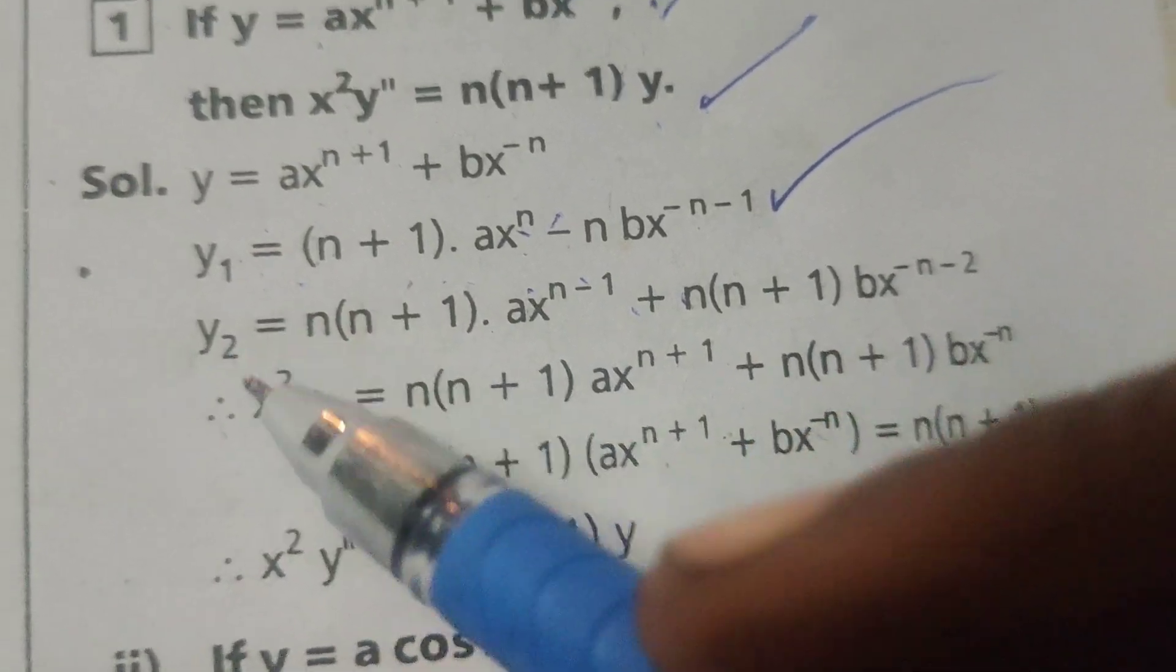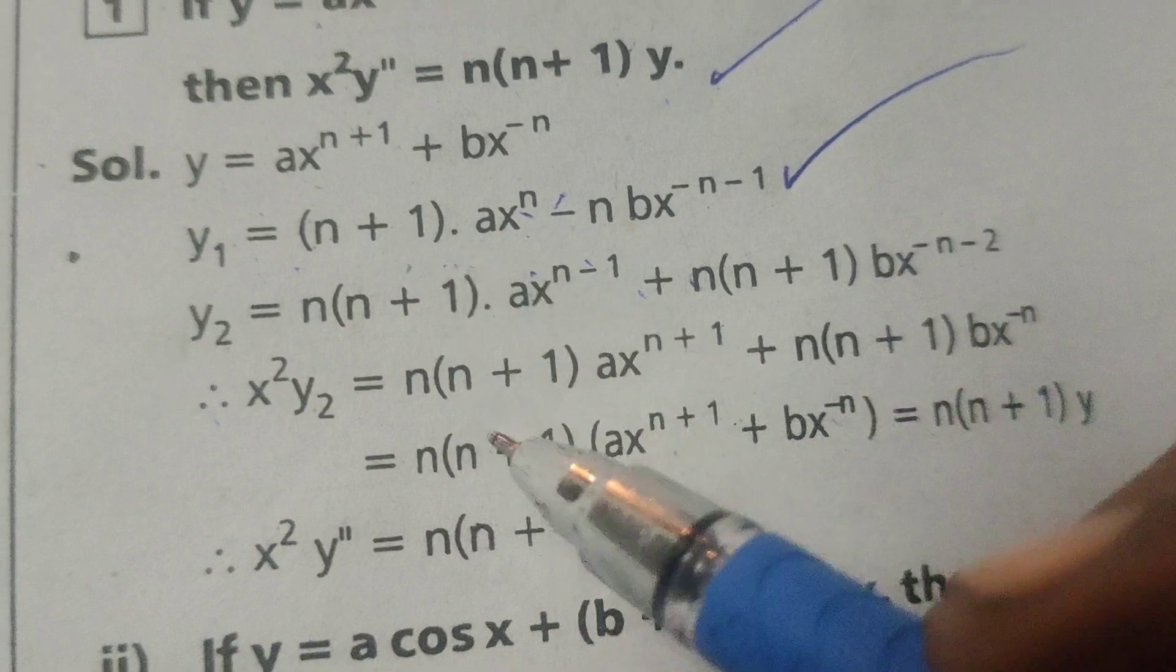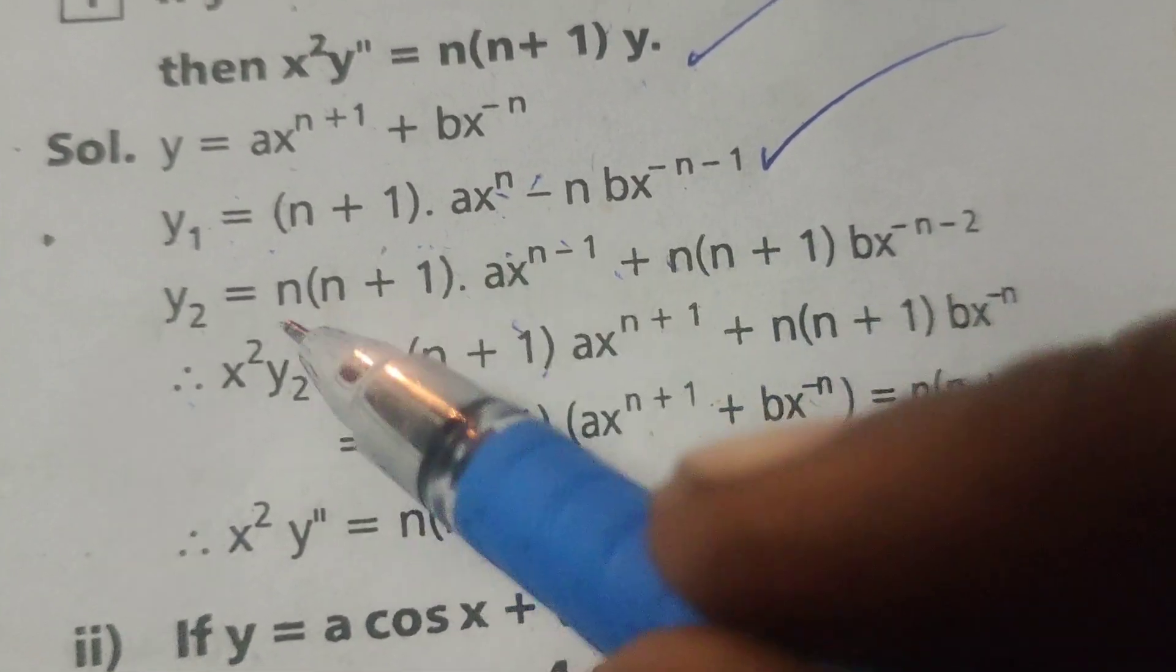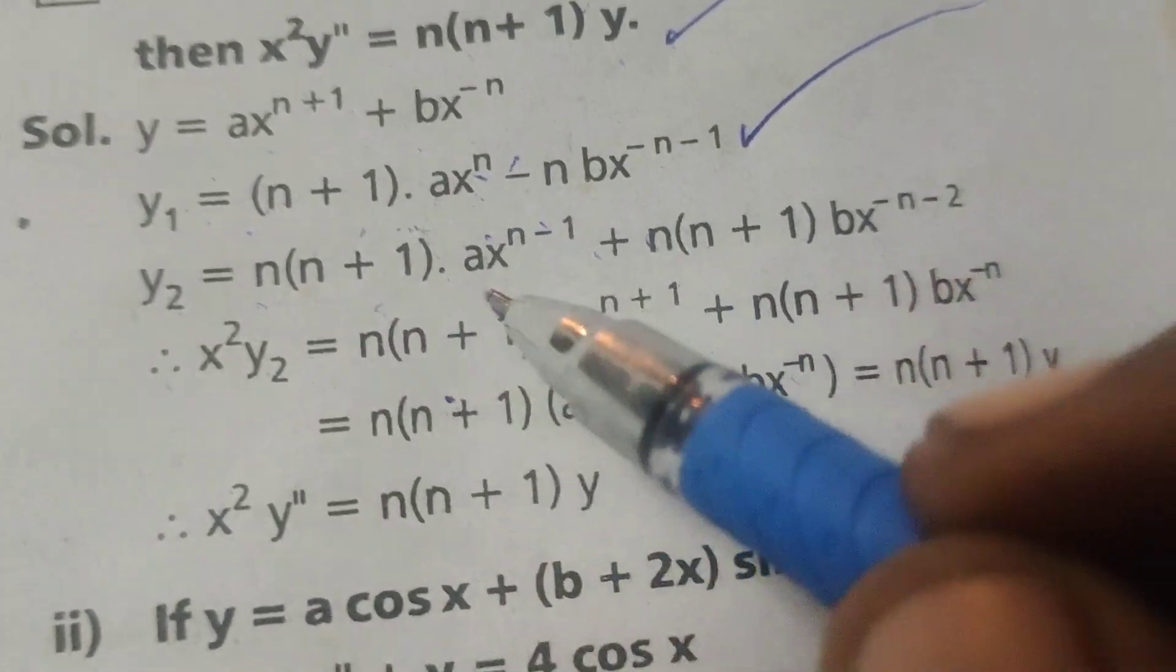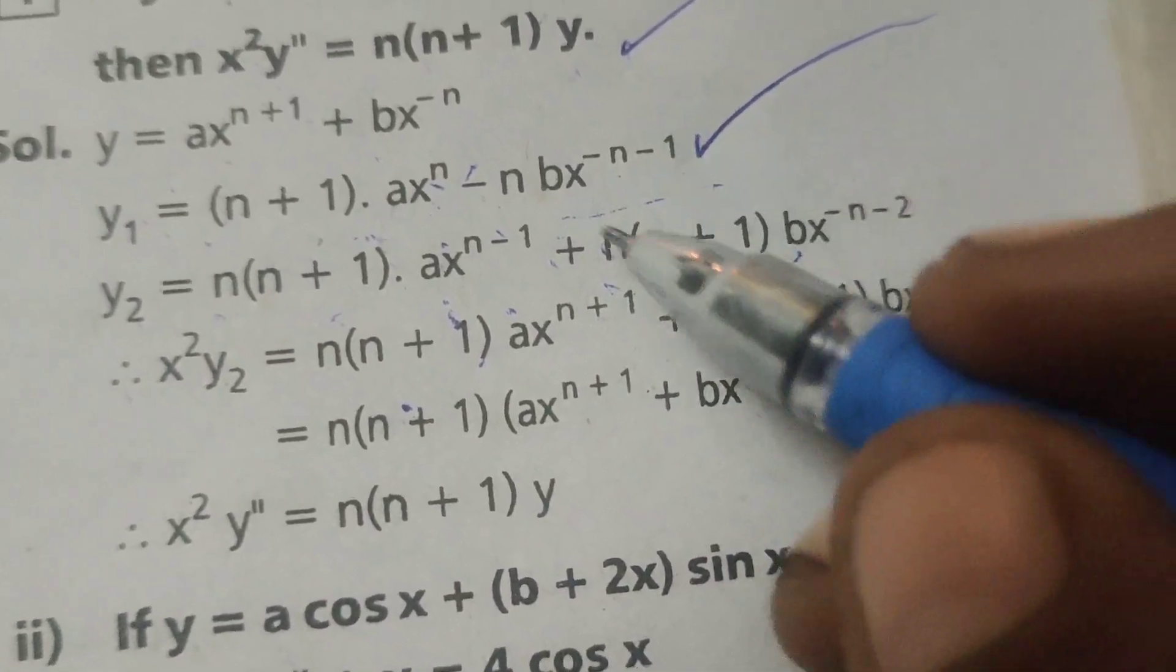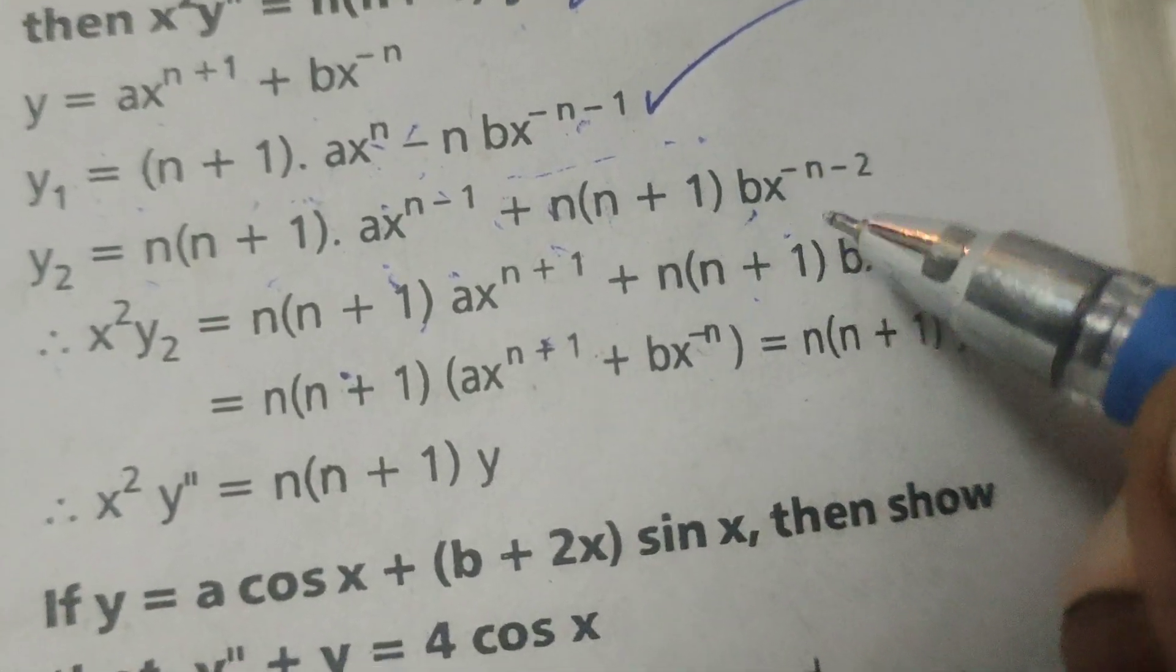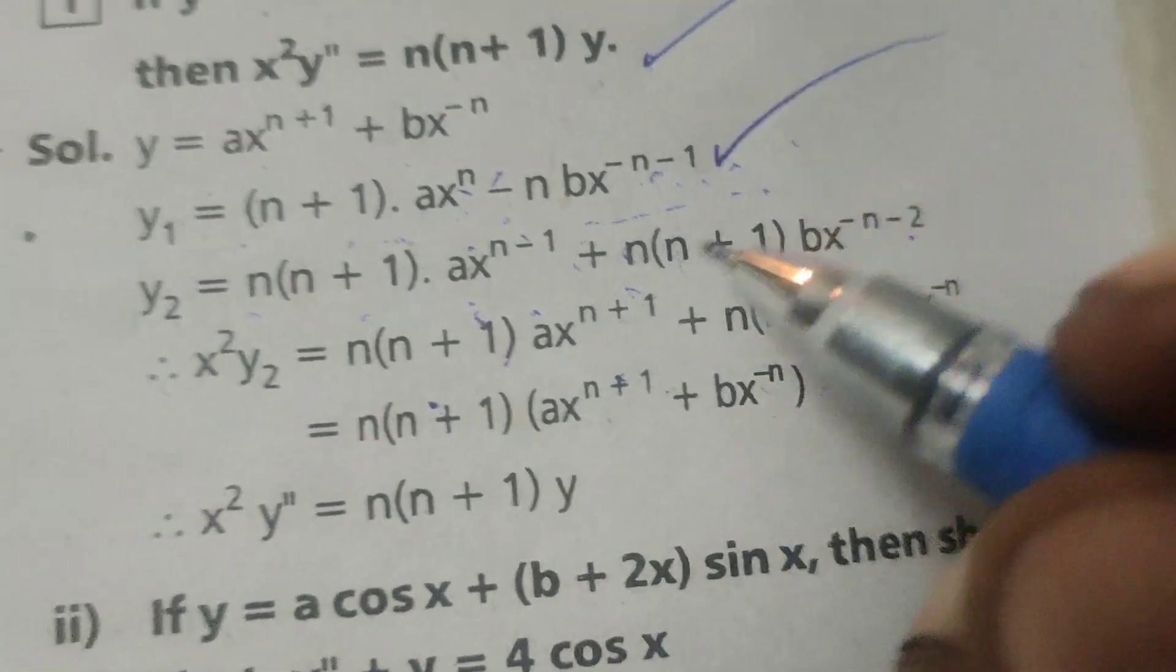Again differentiating this, y2 equals n into n plus 1, a into x power, differentiating n into x power n minus 1, n plus 1 into a is the constant. Here nb is the constant. Differentiating this, minus of minus plus, n plus 1 into bx power minus n minus 1 minus 1, minus 2.